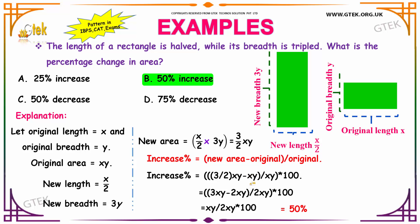Taking 2 in LCM, you get 3xy minus 2xy divided by 2xy. That is xy by 2xy multiplied by 100. Canceling xy terms, you get 50%.